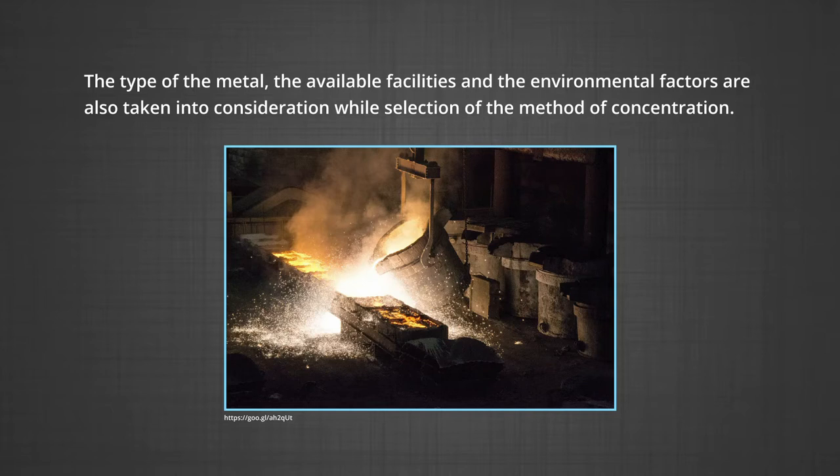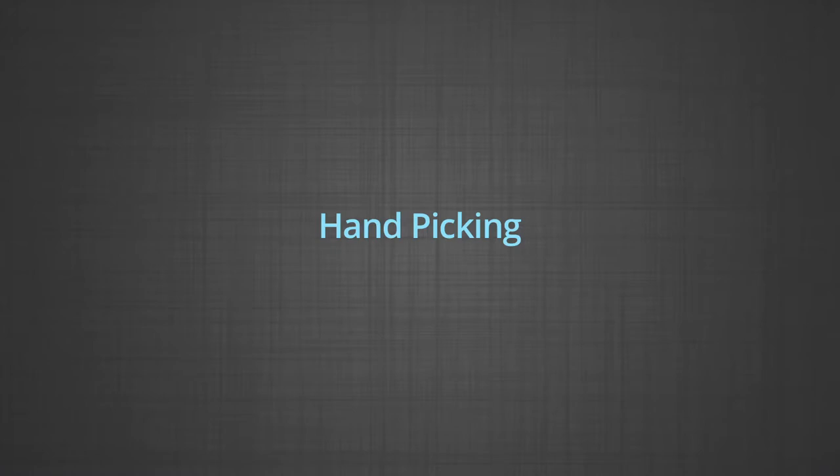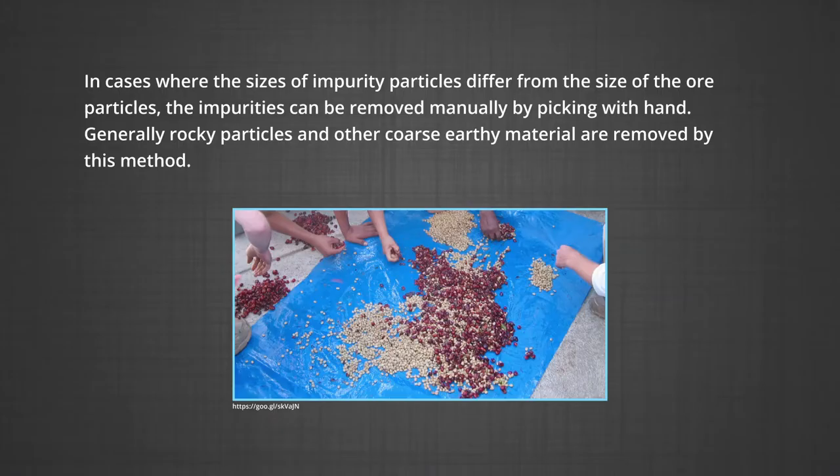The type of the metal, the available facilities, and the environmental factors are also taken into consideration while selecting the method of concentration. Some of the important procedures are: handpicking — this is the simplest method, as we do in our daily routine of cleaning pulses in the kitchen. In cases where the sizes of impurity particles differ from the size of the ore particle, the impurities can be removed manually by picking with hand. Generally, rocky particles and other coarse earthy material are removed by this method.